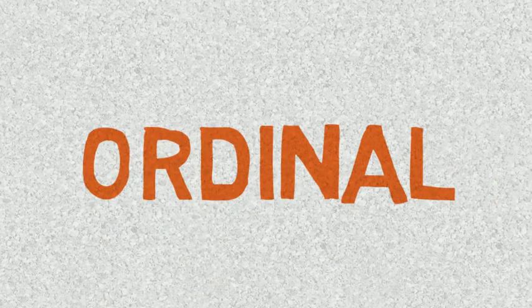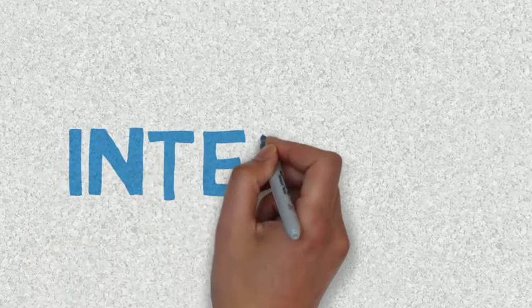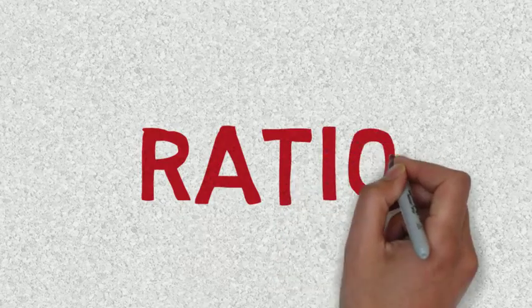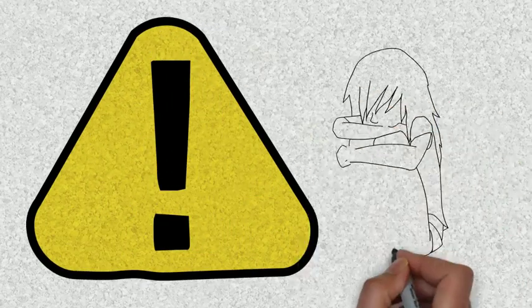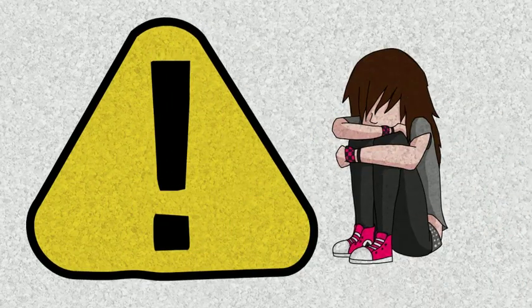There is the nominal level of measurement, the ordinal level of measurement, the interval level of measurement, and finally the ratio level of measurement. Little word of warning here, these can be really confusing. Please take your time with them. Hopefully by the end of the video you won't be crying.